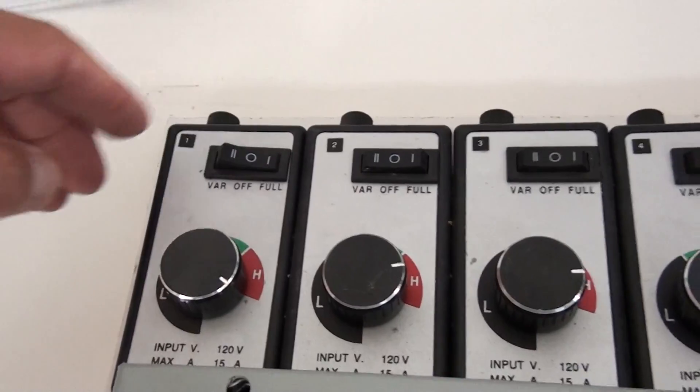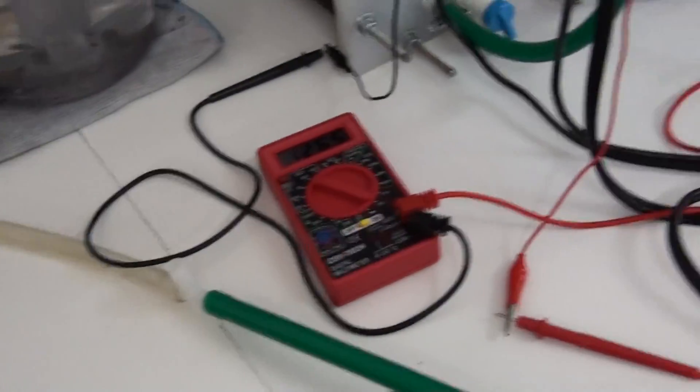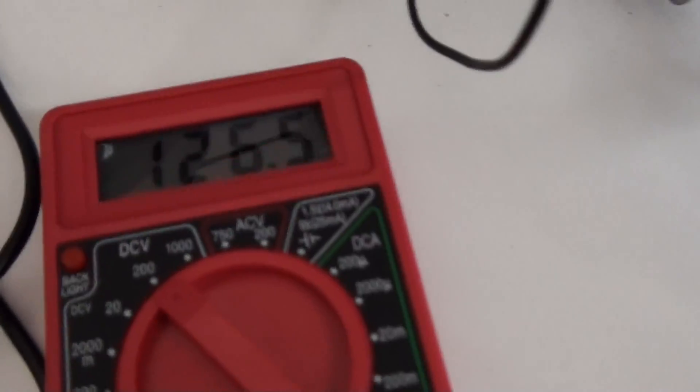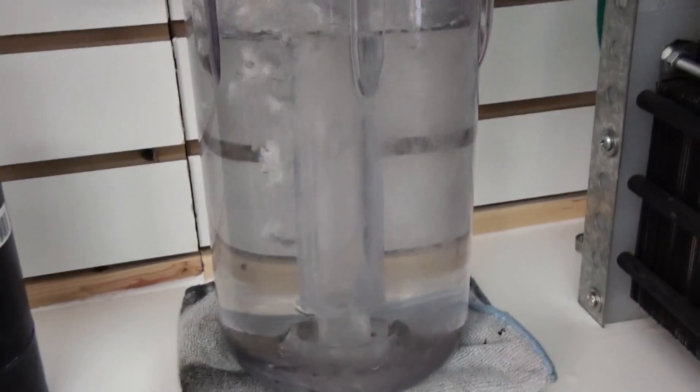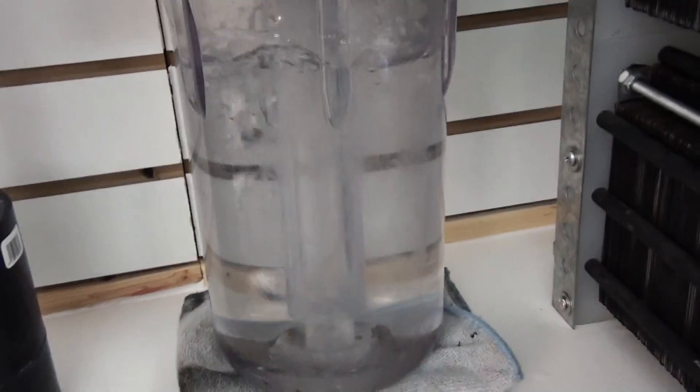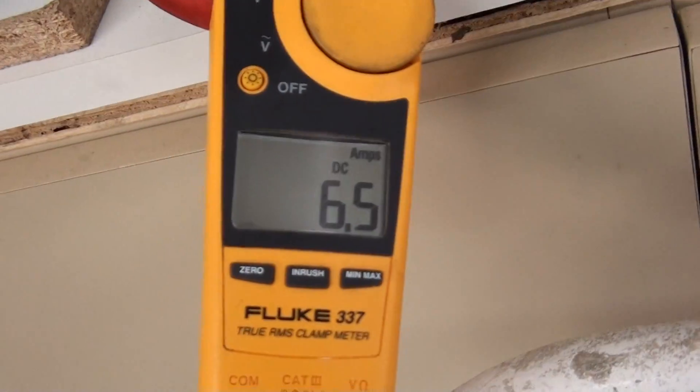So, for right now I'm just gonna put it on full. So you can see right there, 126 volts. You can see the production there off of one of the cells. And we've got 6.5 amps.